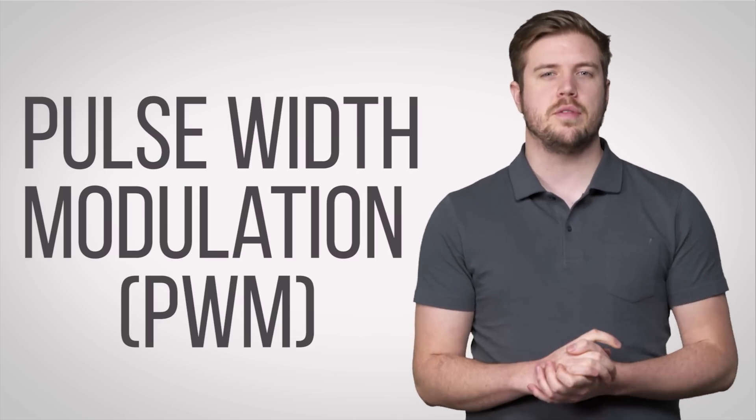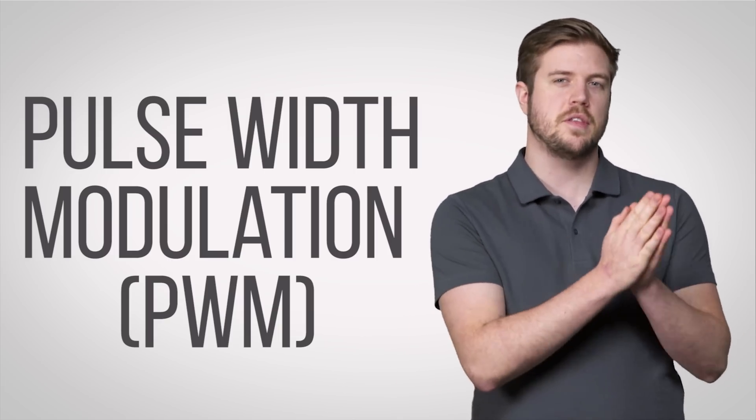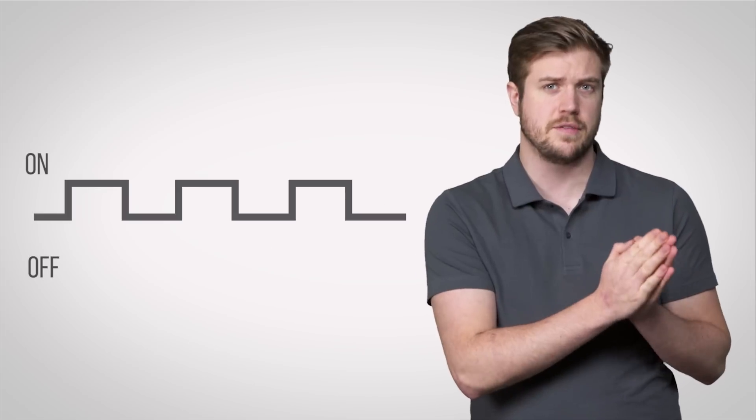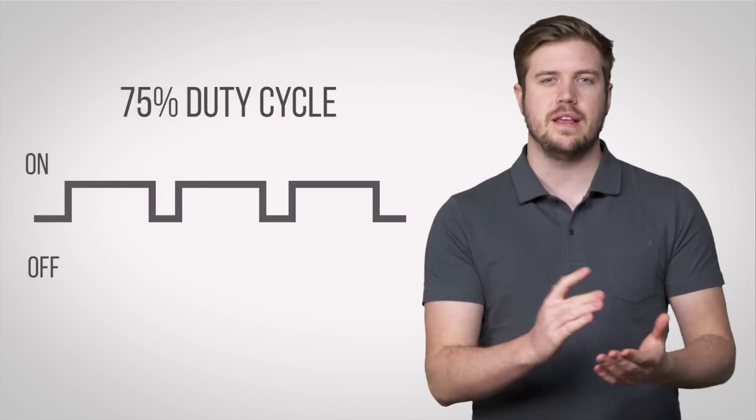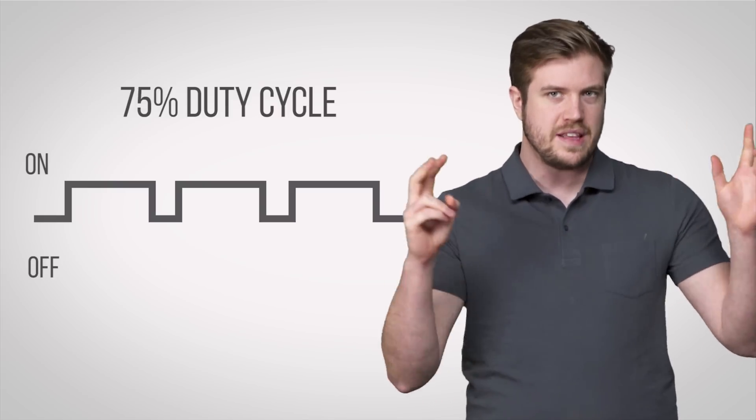So what is pulse width modulation? PWM varies the perceived power going to an electronic device by very quickly turning the power on and off. The perceived output is changed by varying the duty cycle.